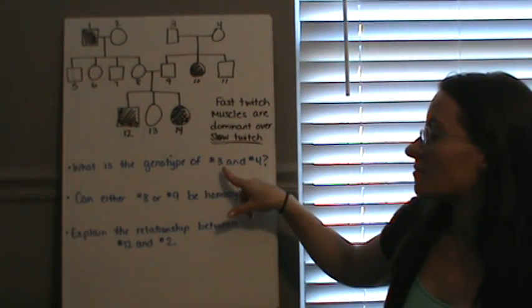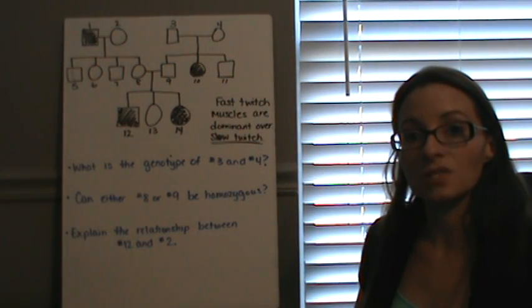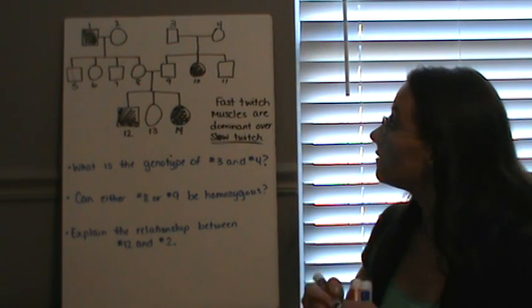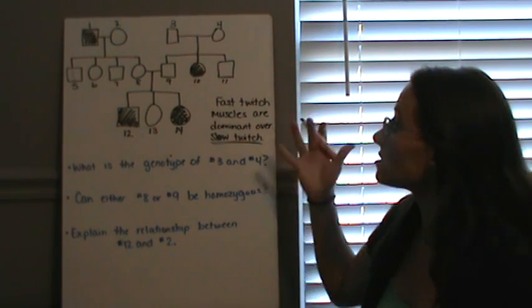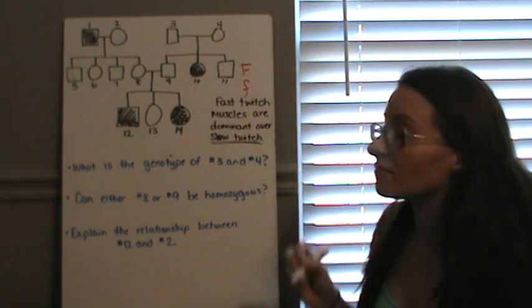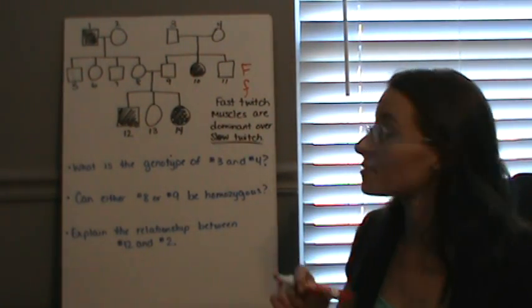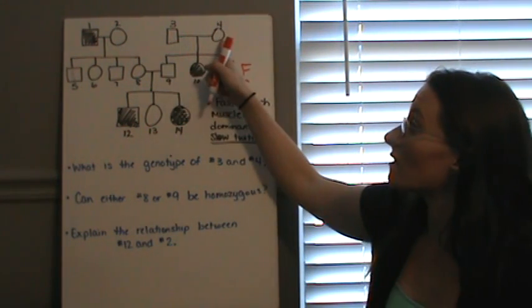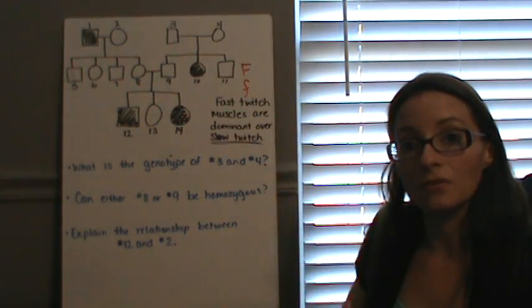If we look at 3 and 4, they both have fast twitch muscles. So they could be genotype — using the letter F for fast twitch, uppercase F for fast twitch, and lowercase f for slow twitch muscles — this is a dominant-recessive inheritance pattern. So each could be big F, big F, or big F, little f. We're not sure yet, so we have to do a little bit of following through the pedigree chart.